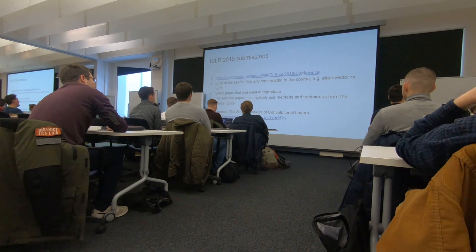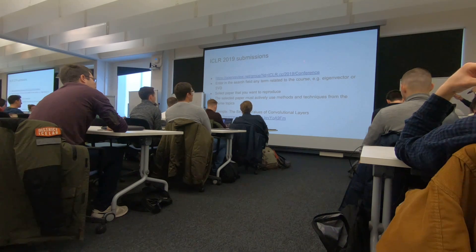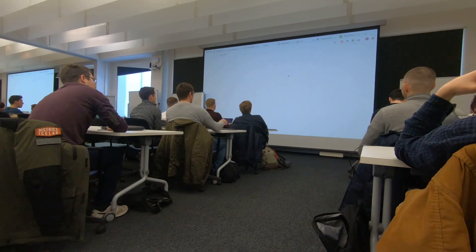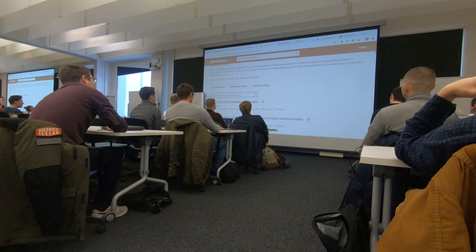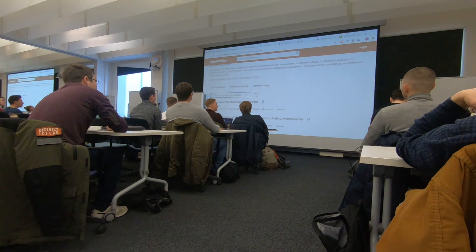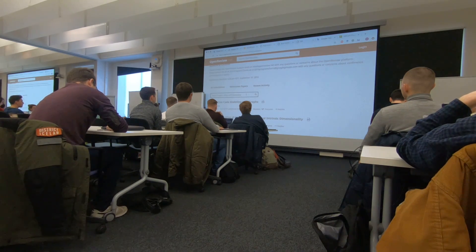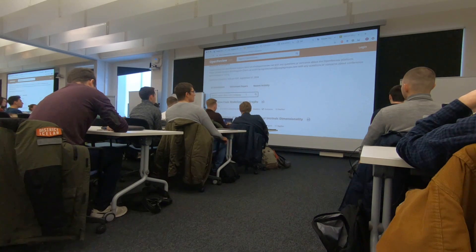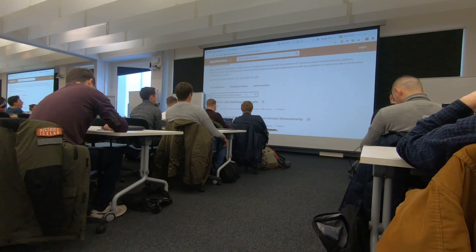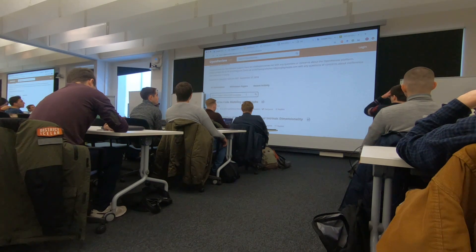Let's move to the second part. You can find here, at this link, the list of ICLR paper submissions. Here is a list of all papers, and there is a search function. You can enter some topics or terms relevant to the course and find papers that use or mention terms we've covered. Then you can take a paper and try to re-implement it or compare with some baselines not mentioned in the paper.